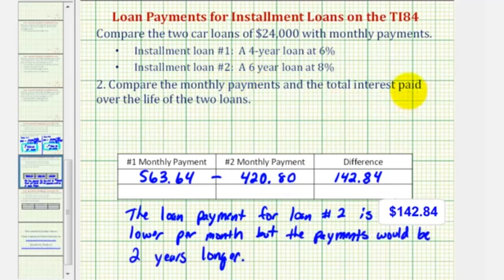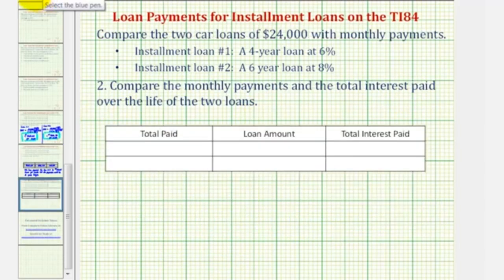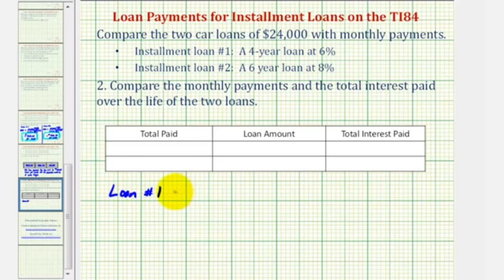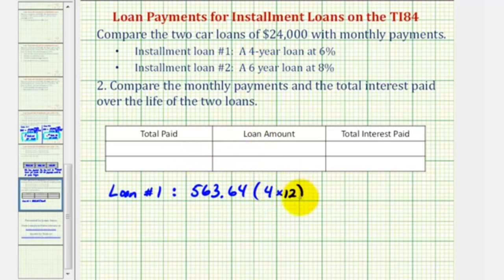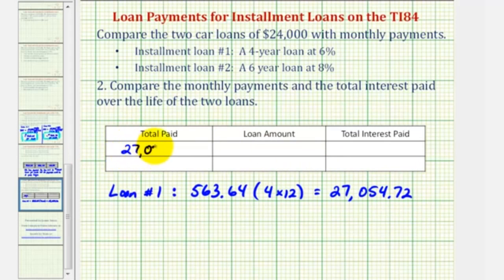Now let's compare the total interest paid over the life of the two loans. To do this, we'll find the total amount paid and then subtract the loan amount to determine the total interest paid. For loan one, the total amount paid is the monthly payment times the number of months over four years: $563.64 times forty-eight, which comes out to $27,054.72. This is the total amount paid over the life of loan one.